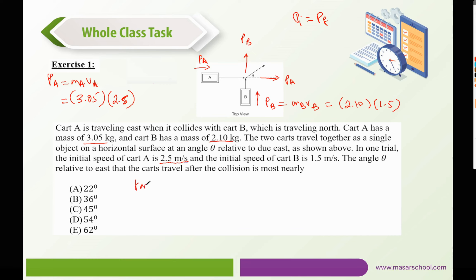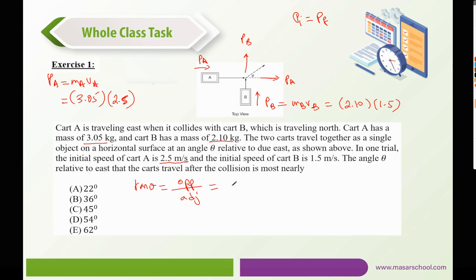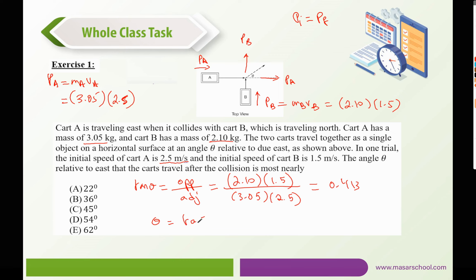We can say tan θ, which is the opposite over the adjacent. The opposite is given by the component of P_B, that is 2.10 multiplied by 1.5, and the adjacent is the component of P_A, given by 3.05 multiplied by 2.5. Plugging that into the calculator, we get approximately 0.413. Then θ is the arctangent, which gives us 22 degrees, making A the correct answer.